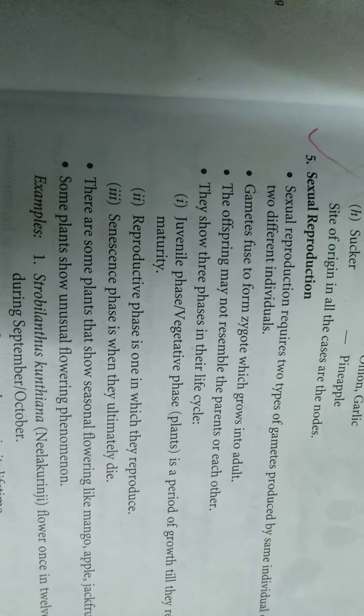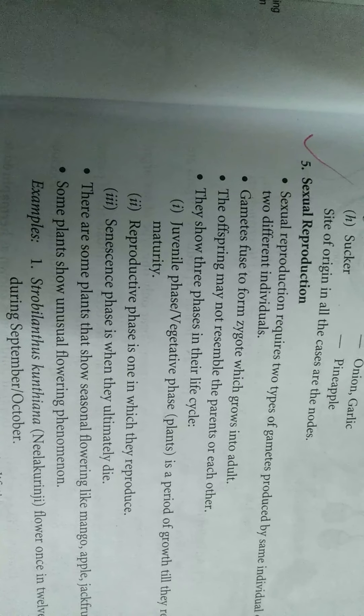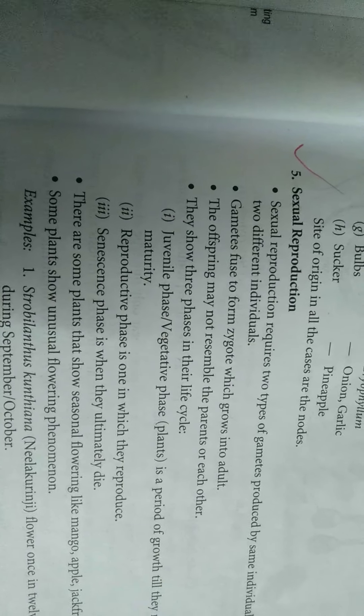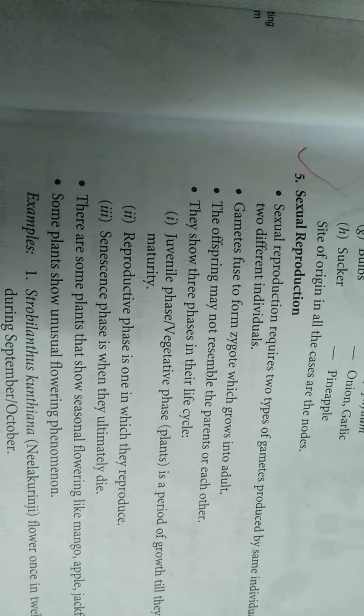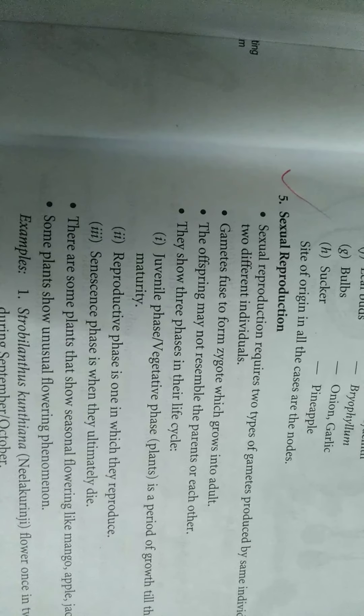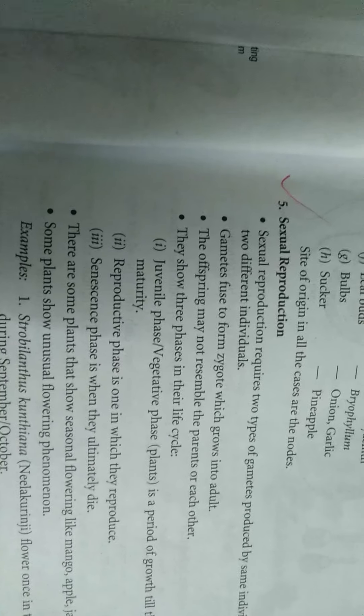Life cycle of an organism is divided into three following phases: juvenile or vegetative phase, reproductive phase, and senescence phase.